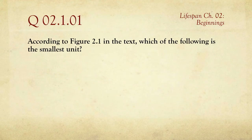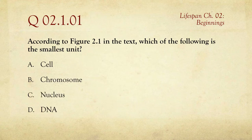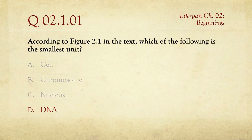The first question: according to Figure 2.1 in the text, which of the following is the smallest unit — the cell, the chromosome, the nucleus, or DNA? The answer is D, DNA, because DNA makes up the chromosomes, and the chromosomes go into the nucleus, and actually into the entire cell, but the nucleus is just one part of the cell. So DNA is the smallest of those four choices.